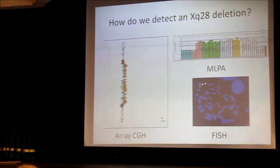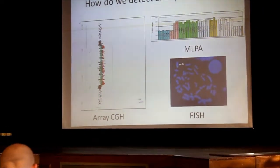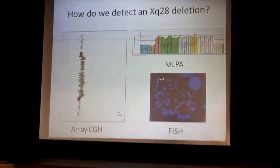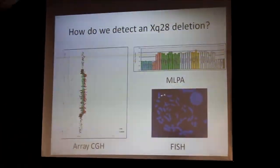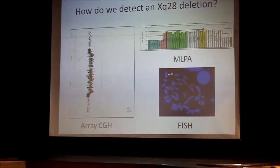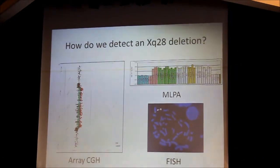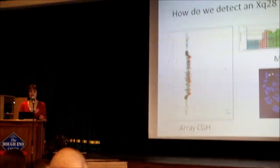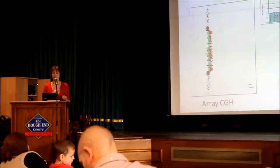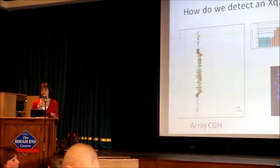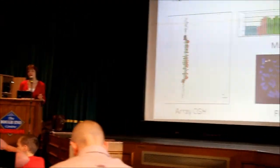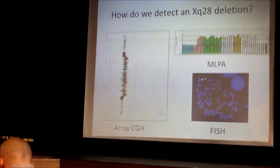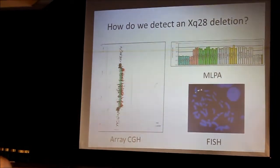There are lots of different ways we can look at that XQ28 region, and I'll mention some of the techniques because some of you may have been investigated using them. Nowadays we don't look down microscopes much, and indeed if we did just look at the chromosomes of someone who had a duplication — an extra bit of XQ28 — we probably wouldn't see anything, because that bit is so small and difficult to see that it usually isn't picked up on routine chromosome tests.